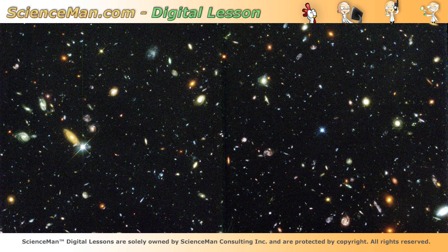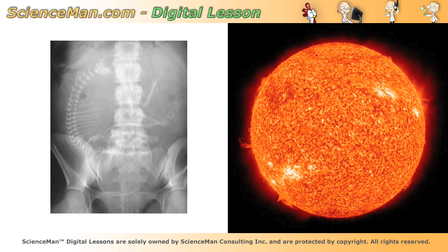X-rays can originate from outer space too, but they can also be man-made, mostly for medical imaging. Ultraviolet radiation can be created as well, but most of our exposure comes from the sun. We all know we need to limit our exposure to the sun and avoid too much tanning and sunburns.